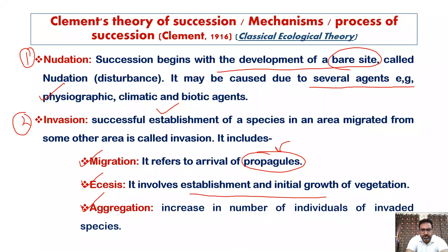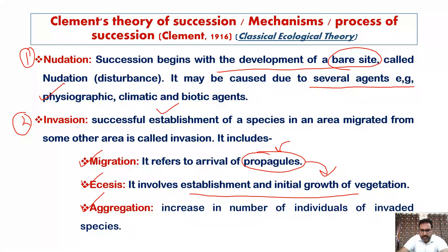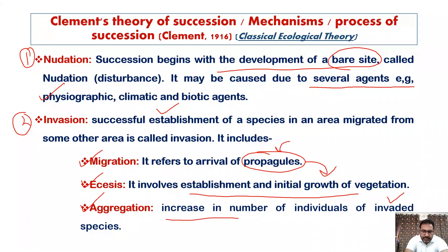Ecesis involves the establishment and initial growth of vegetation. When the propagules establish themselves and initially grow, we call such a process ecesis. The third step in invasion is aggregation — an increase in the number of individuals of the invaded species. The species which migrated to a place, established in that area, and then increased in number — that is called aggregation.